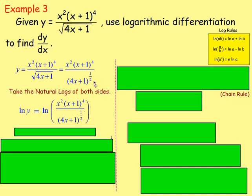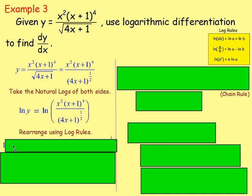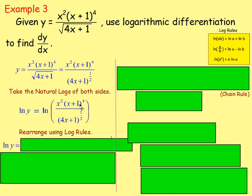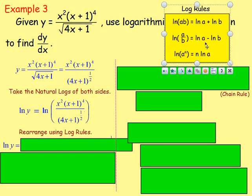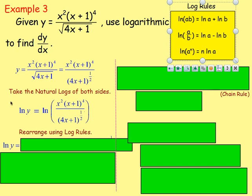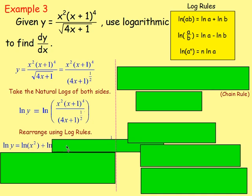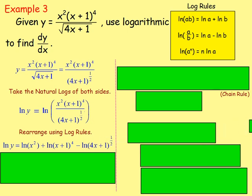Taking natural logs: ln(y) = ln[x²(x+1)⁴ / (4x+1)^(1/2)]. Using log rules, a product becomes a sum and a quotient becomes a difference: ln(y) = ln(x²) + ln((x+1)⁴) − ln((4x+1)^(1/2)). We still have indices, so we use the power rule to bring them down.